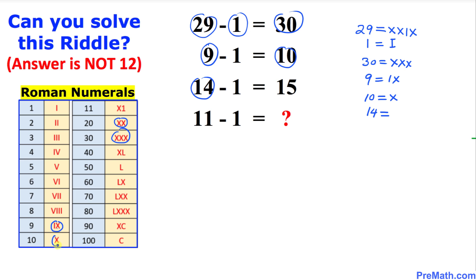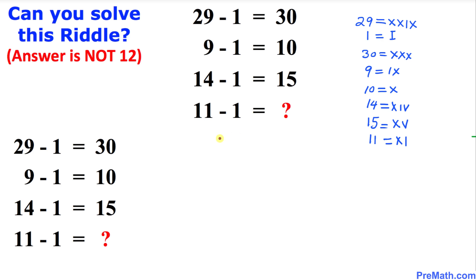14 is likewise going to be 10 plus 4, so this becomes XIV. And then 15 is going to be simply XV. And 11 is going to be simply XI. Here is our next step.